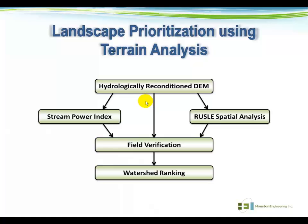Here is the process I'm going to step through in the next few slides. We take the hydrologically reconditioned DEM and compute two different metrics: one is the stream power index, and the other uses the RUSLE equation for spatial analysis. We then move into a very important step — field verification work, often done by our local partners, to make sure what we've done on the computer makes sense and matches what's being seen in the field. Once that's done, we move into developing our ranking and prioritization.